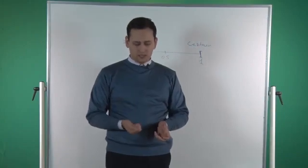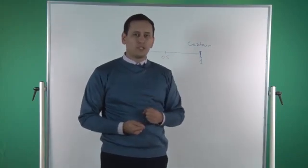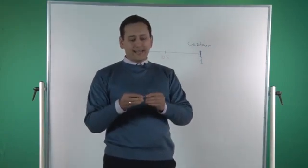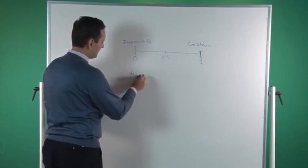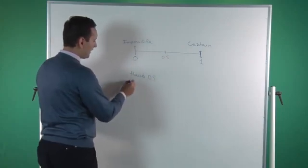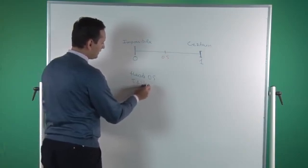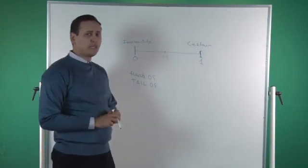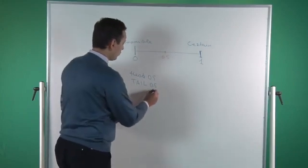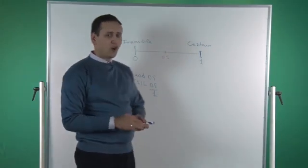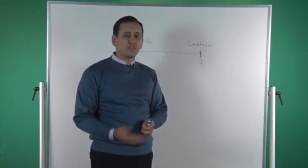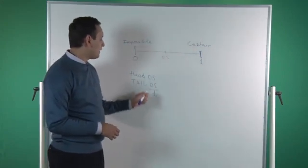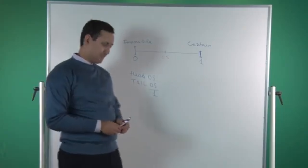If you toss a fair coin, you have two options. You either get heads or tails. The probability of getting heads is 0.5 and the probability of getting tails is also 0.5. We have to remember that all the probabilities will equal 1. Meaning, if we toss a coin, we have only two options — head or tail — and 0.5 plus 0.5 equals 1.